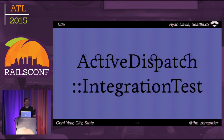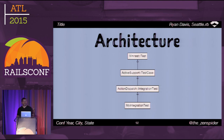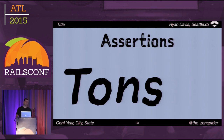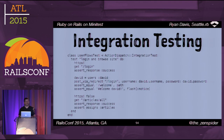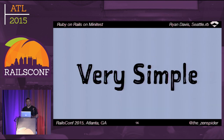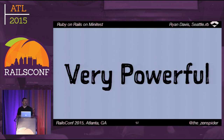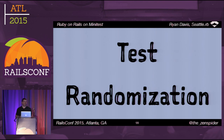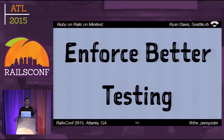ActionDispatch::IntegrationTest provides full controller-to-controller integration tests. It subclasses ActiveSupport::TestCase so all the usual stuff is there. It provides a ton of assertions and allows you to write comprehensive integration tests spanning multiple controllers. Rails's approach to subclassing Minitest::Test leads to a very simple setup that remains powerful, providing everything you need from unit tests all the way up to integration tests. It leverages Minitest's power providing randomization and optional parallelization to make your tests better and more robust.